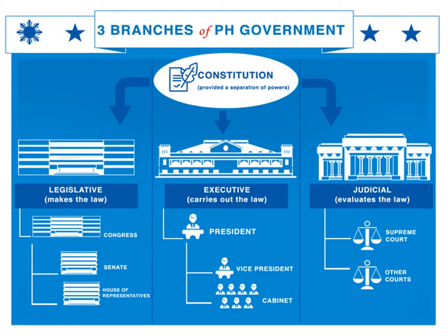Another principle is checks and balances. There must be an interrelationship between the three branches of government — each department must be checked and balanced by the other. For example, if we wanted to create a bill into law, there must be a relationship between the three branches.